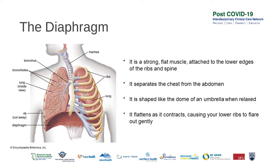The most important muscle used for your breathing is the diaphragm. It is a strong flat muscle attached to the lower edges of the ribs and spine, separating the chest from the abdomen and shaped like the dome of an umbrella when relaxed. A good breathing pattern involves the lower ribs, which flare out gently when you breathe in, helping the diaphragm to flatten when it contracts, while the upper chest area remains relaxed. The diaphragm muscle contracts about 18,000 times in 24 hours and doesn't fatigue unlike the muscles around your upper chest and shoulder girdle area. Utilising your diaphragm for breathing is the most energy efficient way to breathe and can help with managing fatigue.